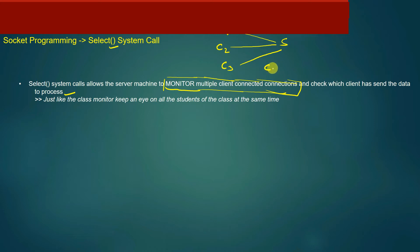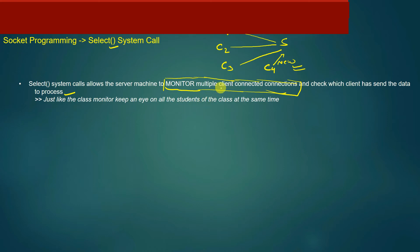Suppose there is a client C4 which is not yet connected to server S but sends a new connection initiation request. Using the select system call, server S can not only monitor existing connected clients but also monitor new connection initiation requests from new clients. Just like a class monitor keeps an eye on all students simultaneously, the server keeps an eye on all file descriptors of connected clients as well as new connection requests, and can take appropriate action.